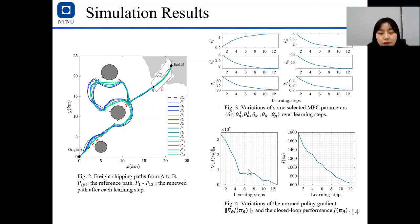And these are the variations of the norm of policy gradient over learning steps. As you can see, it goes to zero. And also, this is our closed-loop performance j. You can see that over learning steps, finally, it will be minimized.